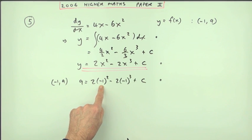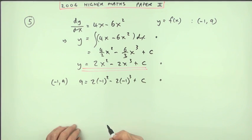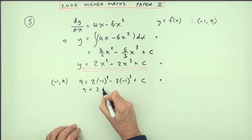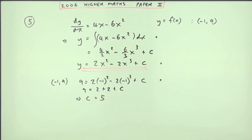Well, that's a positive 1, so that's a 2. That's a negative 1, but subtract it, so that's another 2. We could put it down, I suppose. That's a 2 plus a 2 plus a c, which means c equals, take the 4 across, c equals 5.